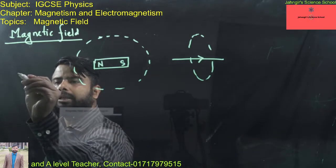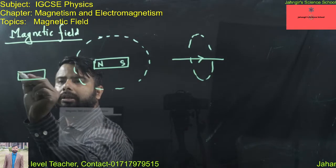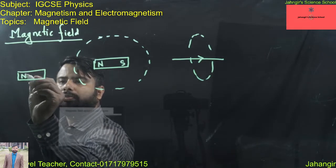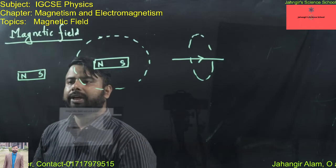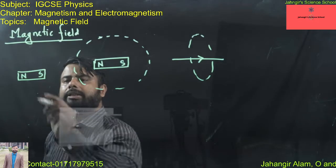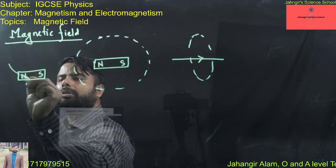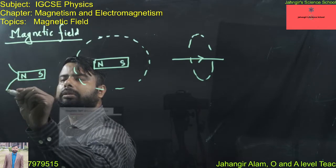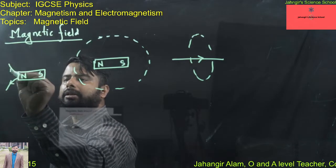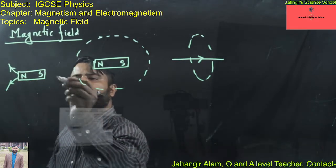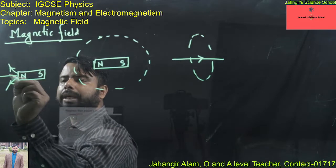For a bar magnet with a North Pole and South Pole, the magnetic field is exerted around it. Magnetic field lines are imaginary lines which show the direction of the magnetic field.